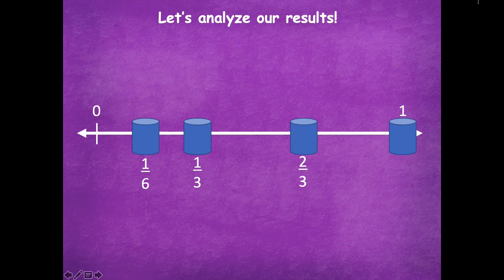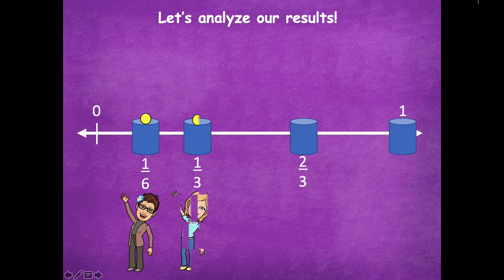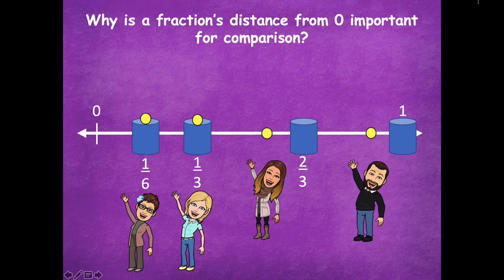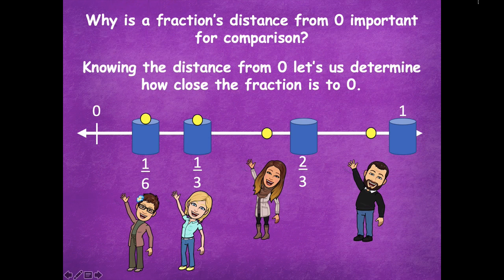Let's analyze our results. Mrs. Glenn nailed it at one-sixth. Mrs. Holt nailed it at one-third. Mrs. McDougall was close but couldn't quite get it into that two-thirds container. And Mr. Walker didn't make it into the one either. So why is a fraction's distance from zero important for a comparison? Because knowing the distance from zero lets us determine how close the fraction is to zero, so we're able to compare which one is closer or farther from zero.